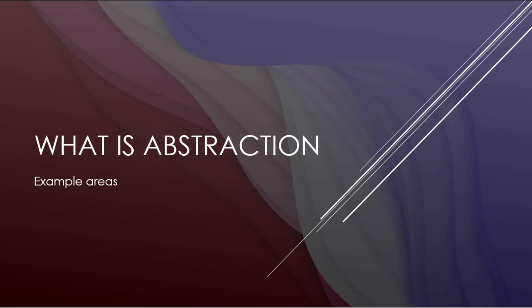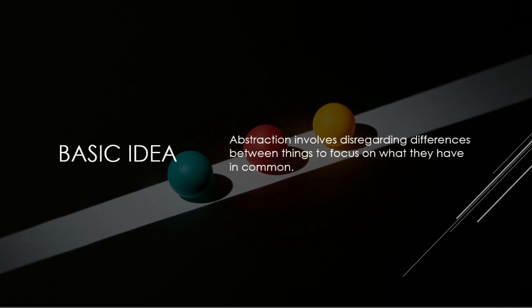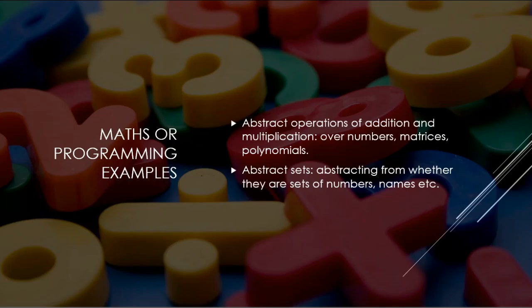So, what is abstraction, which both of them are calling upon here to discuss labour? The basic idea in abstraction is that you ignore differences between things to focus on what they have in common. You can ignore the difference between the colours of balls on a slope and just focus on the fact that they're all balls. In maths and programming we use abstraction a lot — abstract operations of addition and multiplication, whether over numbers, matrices, polynomials, etc. You can talk about sets in the abstract, focusing only on common properties like union and intersection.